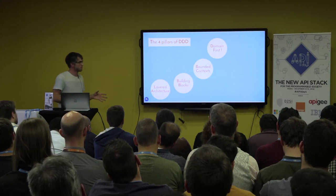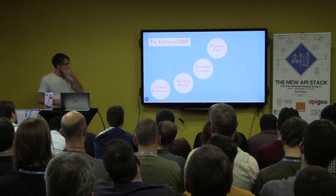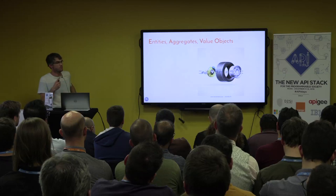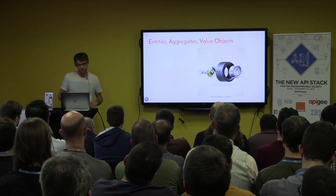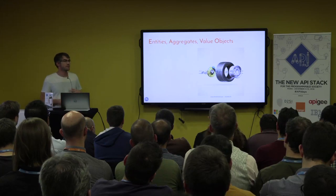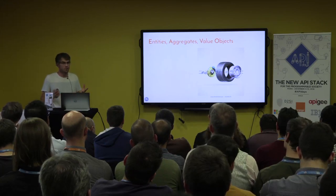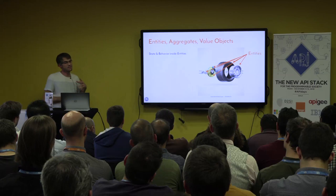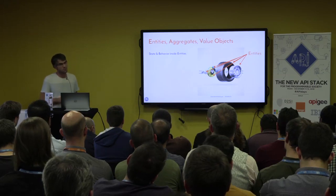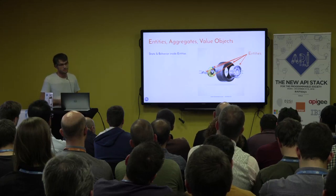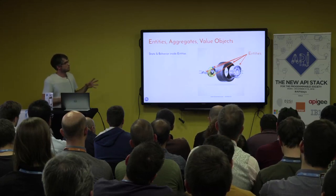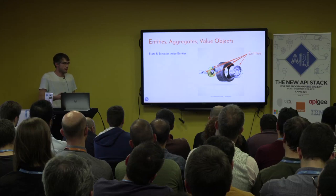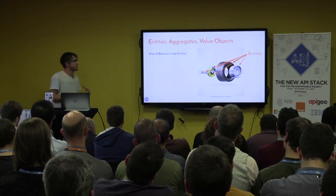Let's look at the building blocks that bounded contexts lean on. A nice thing about DDD is the concept of value objects, but first I need to tell you about entities and aggregates. DDD emphasizes the object-oriented approach every developer knows. Instead of services containing all the business logic, DDD invites you to wrap that up inside entities. Entities are your objects — your concepts — and they not only contain the state of the application but also its behavior. This is called a rich domain model by Eric Evans, opposed to an anemic domain model where state management and behavior are outside of the entities.